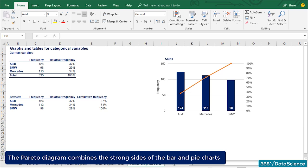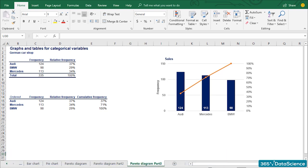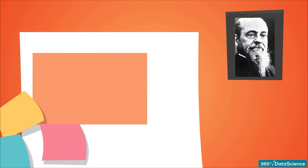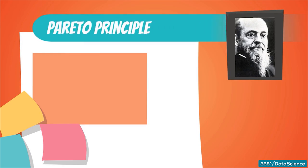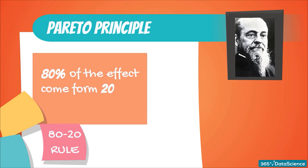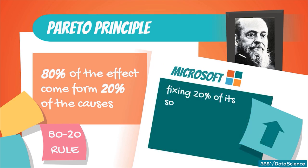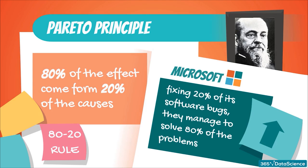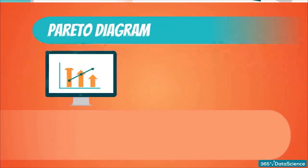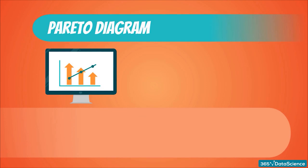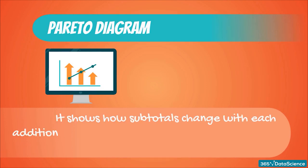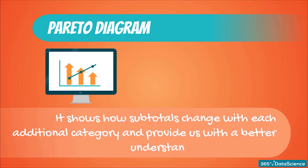The Pareto diagram combines the strong sides of the bar and the pie chart — it is easy to compare data both between categories and as a part of the total. It is named after Vilfredo Pareto, who also created the Pareto principle, also known as the 80-20 rule: 80% of the effects come from 20% of the causes. A real-life example is a statement by Microsoft that by fixing 20% of its software bugs, they managed to solve 80% of the problems customers experience. A Pareto diagram can reveal information like that.